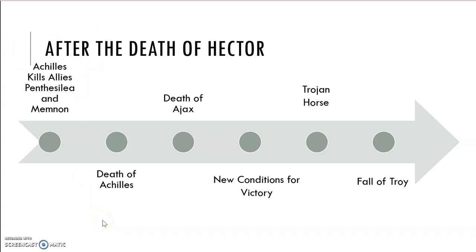After that, there are a series of deaths that are very serious and have long-lasting impacts for the Greeks — the death of Achilles and then the death of the warrior Ajax. At that point, new conditions for victory are given to the Greeks by the gods, putting them on a quest to figure out what they need to do to win this war. When that fails, they are forced to resort to trickery and deceit, and that's where we get the story of the Trojan horse, and finally the actual fall of the city of Troy.